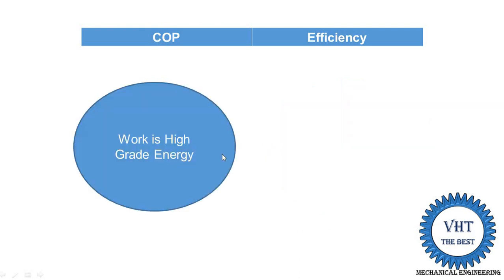The second point is that in the refrigeration system, we supply high-grade energy. High-grade energy is work energy — work energy is one form of high-grade energy. High-grade means its complete conversion of energy is possible. When complete conversion is possible, that means its performance can be more than 100%.